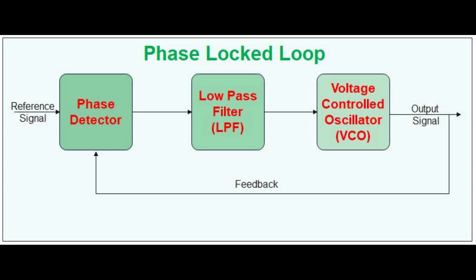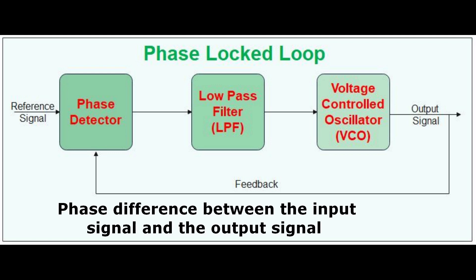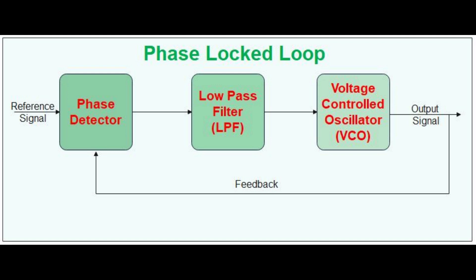The first PLL was introduced in 1923 and it was implemented in the synchronization of communication systems without Doppler shift. The PLL consists of a phase detector that determines the phase difference between the input signal and the output signal to provide a good error signal. The phase detector is usually a comparator or a multiplier.